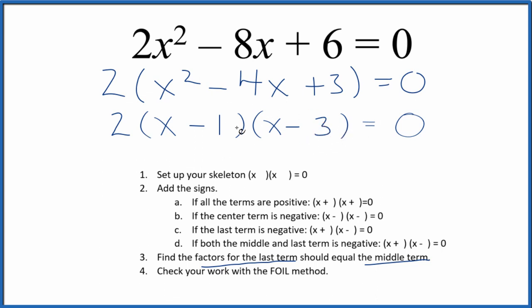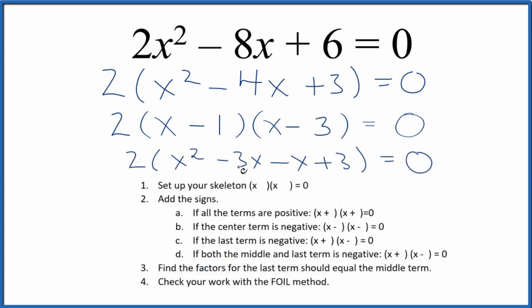We could use the FOIL method here to figure out if this part is the same as this. First term, outside, inside, and then last. That gives us x² - 3x - x + 3. We can combine these: negative 3x and negative x is negative 4x, and it's the same thing as we have up here. So we've done this correctly.